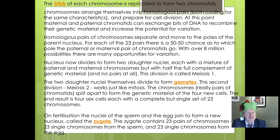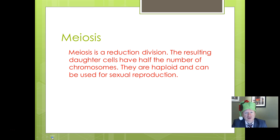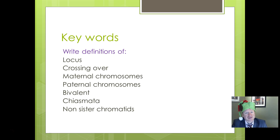Let's check through that in more detail. You need to be saying meiosis is an example of something called reduction division. It reduces the number of chromosomes present to half the original number. The daughter cells have half the number of chromosomes — they're haploid.